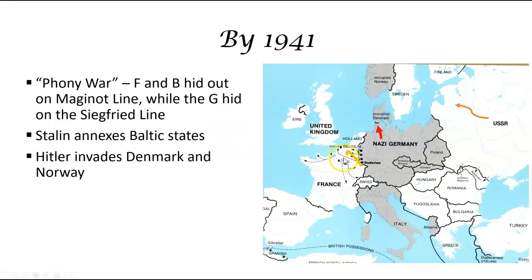France had built the Maginot Line after World War I to prevent Germany from ever attacking again — a big bunch of concrete bunkers. They thought: we're safe. It stops right around the middle of Belgium, but not a problem because this part down here is mountains, and this part up here is Belgium, and Germany's not going to invade Belgium, so problem solved.